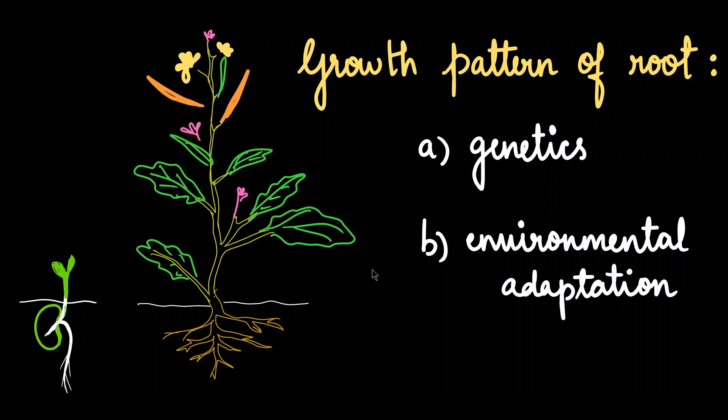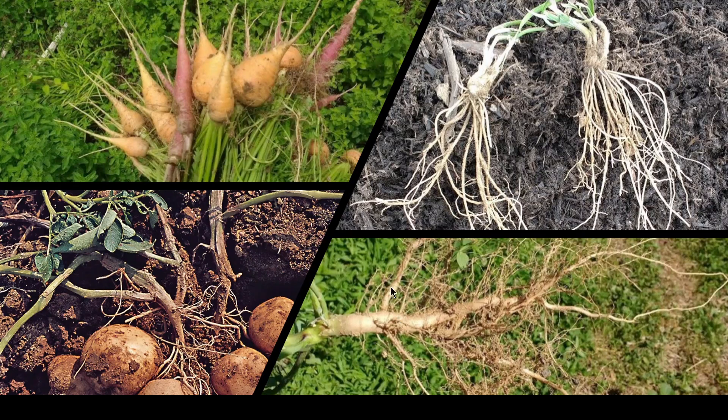We have observed that whatever may be the plant, we can categorize their roots into two major types. So I have shown you four pictures here. Take a minute to observe them and see if you can group two of these roots together in one single category. I'll give you a few seconds.